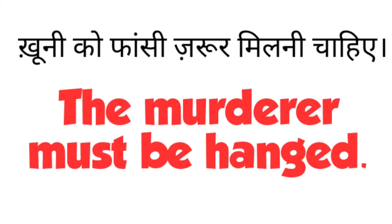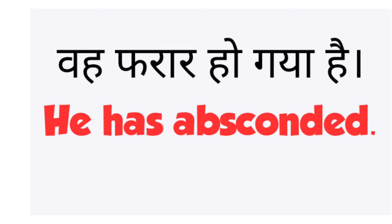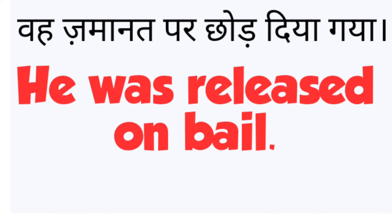The next sentence is: the murderer must be hanged. The next sentence is: he has absconded. And the next sentence is: he was released on bail.